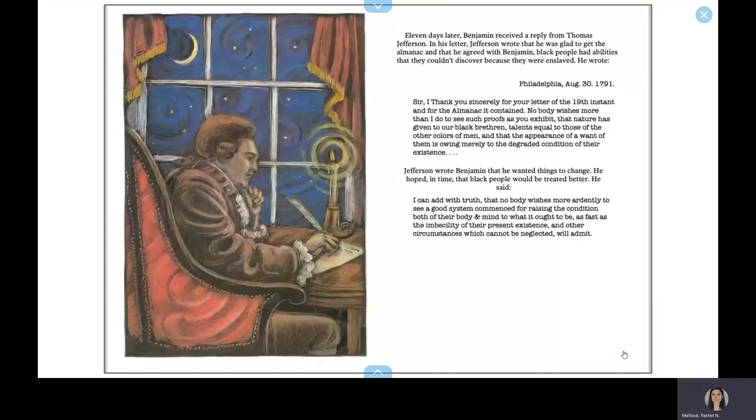Eleven days later, Benjamin received a reply from Thomas Jefferson. In his letter, Jefferson wrote that he was glad to get the almanac and that he agreed with Benjamin. Black people had abilities that he couldn't discover because they were enslaved. He wrote: Philadelphia, August 30, 1791. Sir, I thank you sincerely for your letter of the 19th instant and for the almanac it contained. Nobody wishes more than I do to see such proofs as you exhibit, that nature has given to our black brethren talents equal to those of the other colors of men and that the appearance of a want of them is owing merely to the degraded condition of their existence.